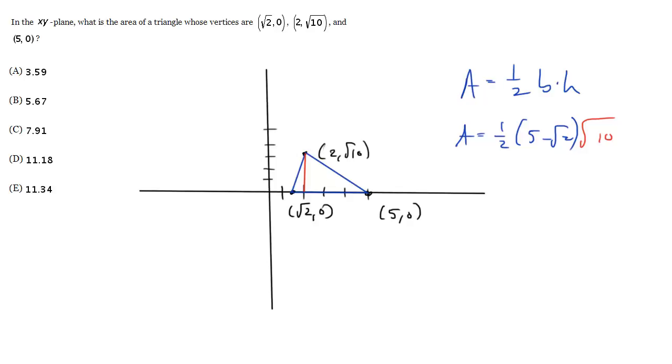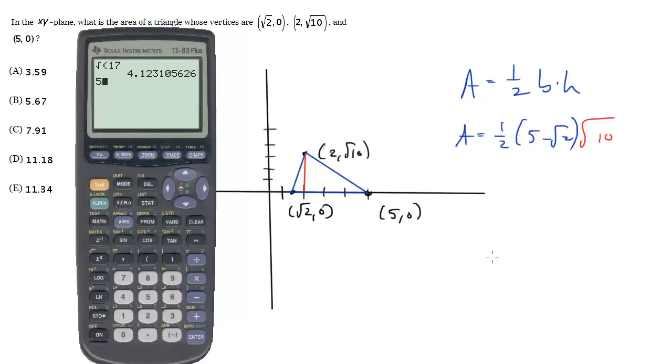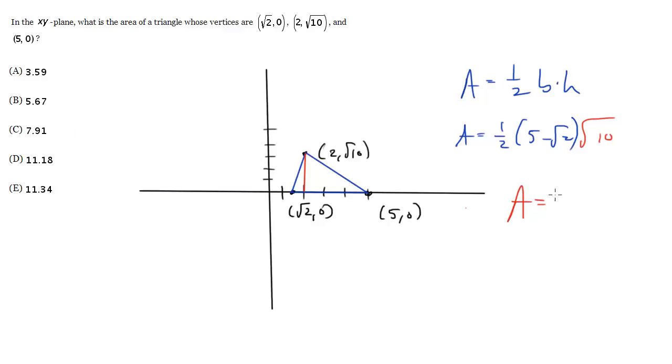And we'll just use our calculator to find the actual answer here. So it's going to be 5 minus the square root of 2 times the square root of 10, and then times a half, or divided by 2, gets us 5.67. And that's choice B.